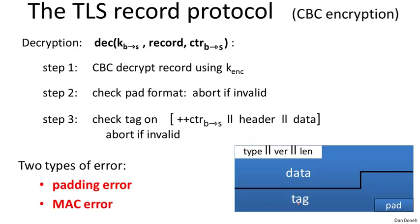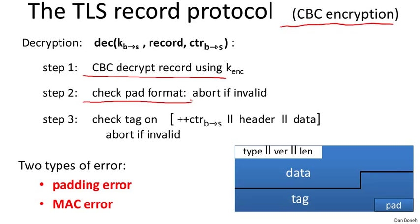So let's look at a very cute attack on the TLS record protocol, in particular when CBC encryption is used. Let me briefly remind you that the way TLS decryption works is: first, an incoming ciphertext is CBC decrypted. Then the implementation checks that the pad has the correct format — for example, if the pad is of length five, the format should be 5 5 5 5 5. If it's not of the correct format, the ciphertext is rejected.